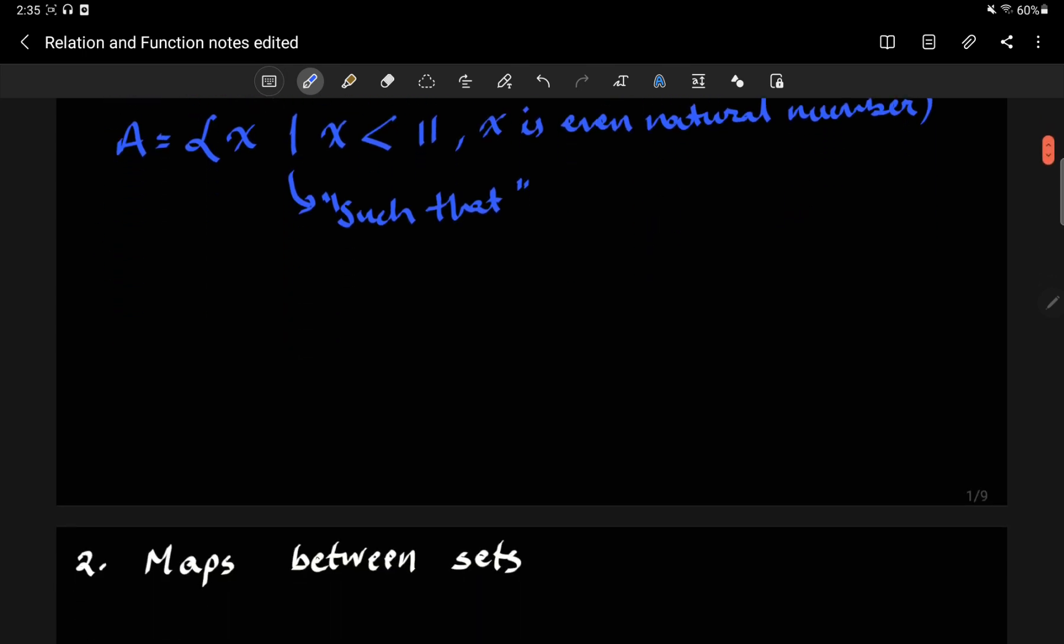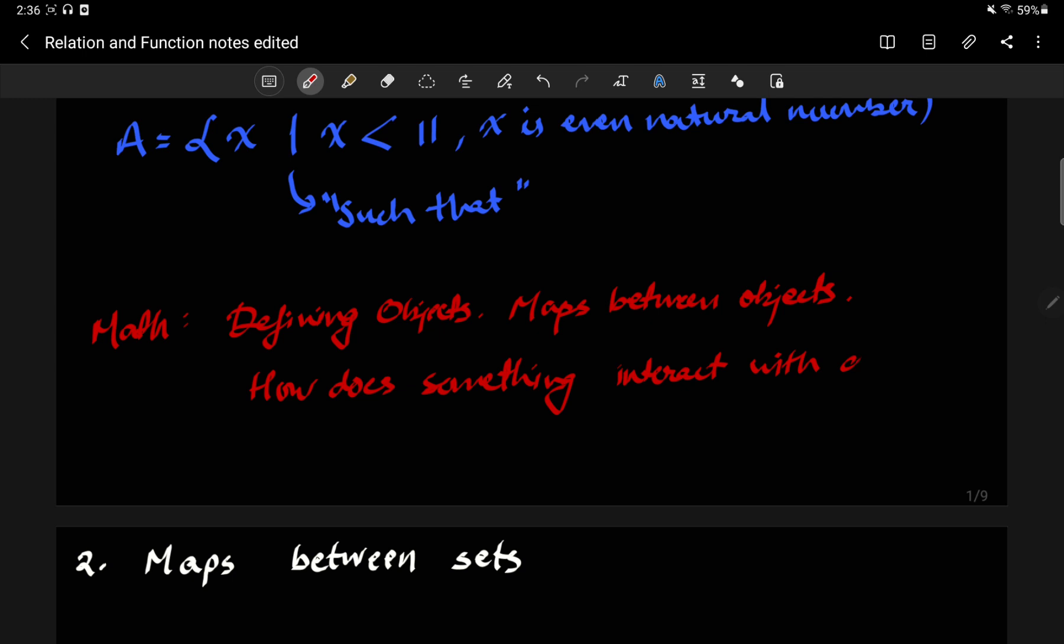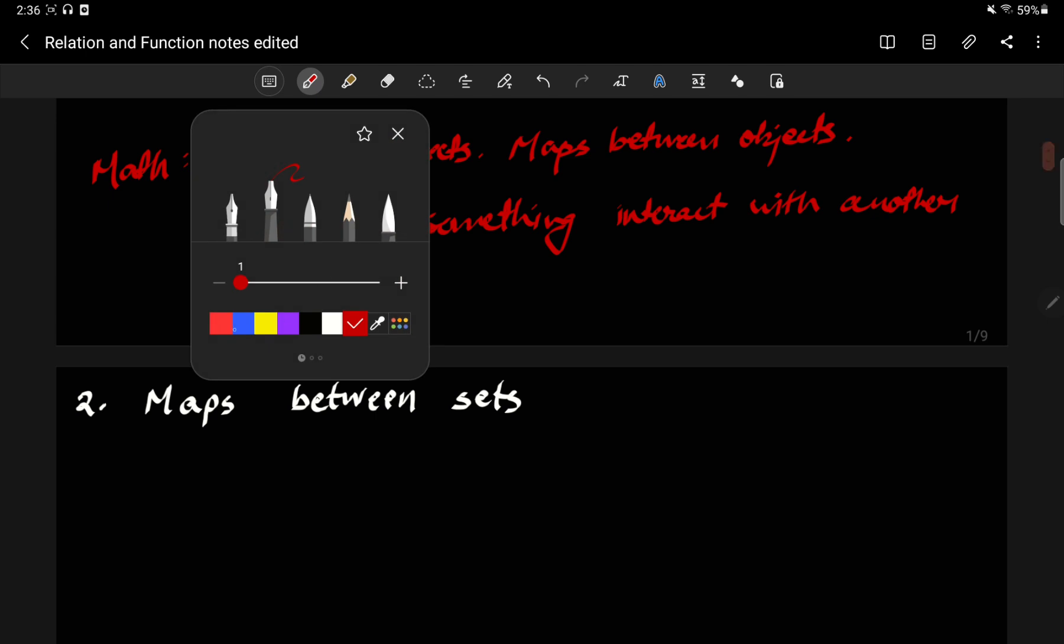Now, one of the most important tools, a central idea in math is defining some objects, right? For example, we define the set. But to learn more about the objects, we have to look at the maps between these objects. Maps between objects mean you're trying to determine properties of an object by looking at how it interacts with something else. So this is always a central tool in mathematics is how does something interact with another object. And studying how this interaction takes place results in very rich theories in mathematics about these objects.